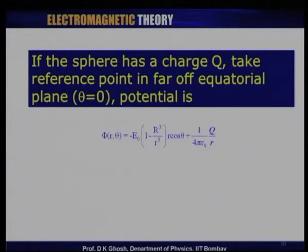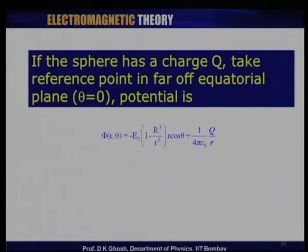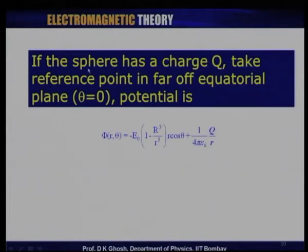This was an uncharged sphere. If the sphere had a charge, we are aware that at far distances it looks like a point charge at the origin. So to the potential we derived, we must add the potential due to a point charge located at the origin. That would be the potential if this sphere had a charge and is put in an electric field of strength E_0 along the z axis.